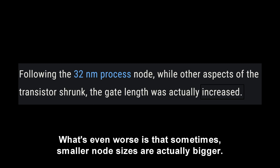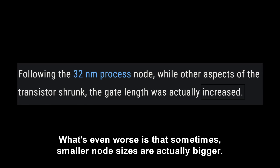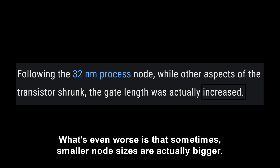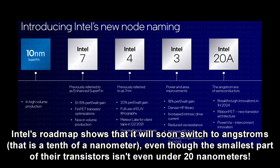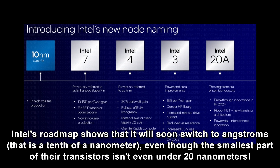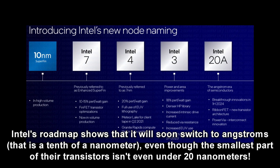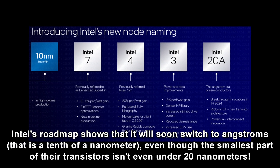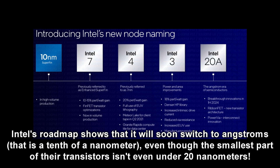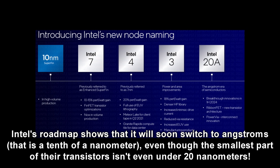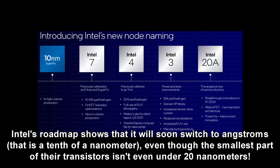What's even worse is that sometimes smaller node sizes are actually bigger. Intel's roadmap shows that it will soon switch to Angstroms — that is a tenth of a nanometer — even though the smallest part of their transistors isn't even under 20 nanometers.